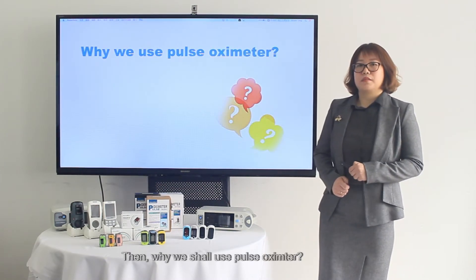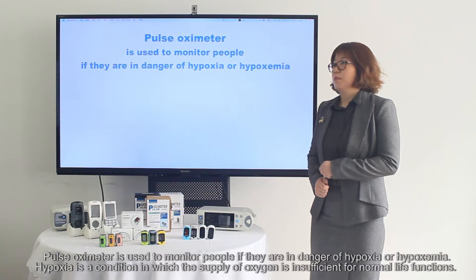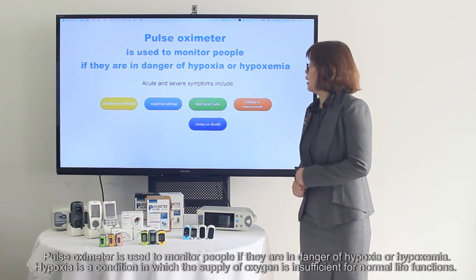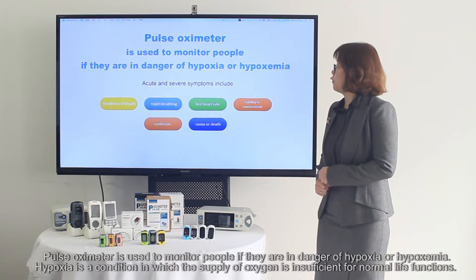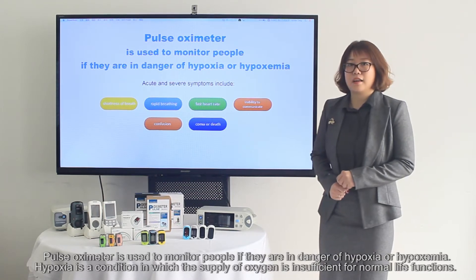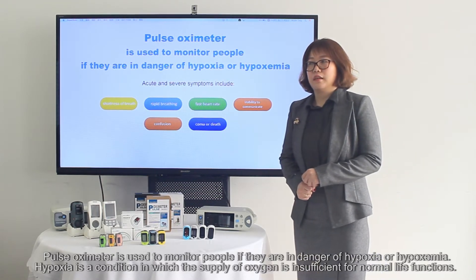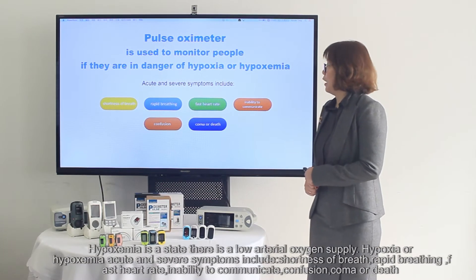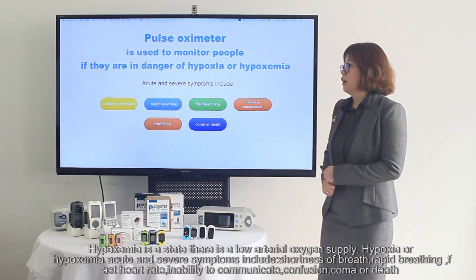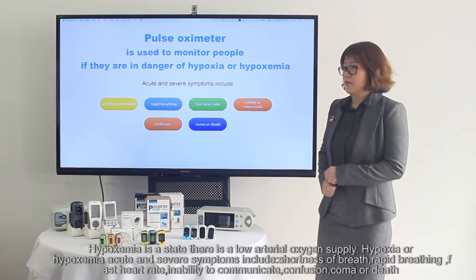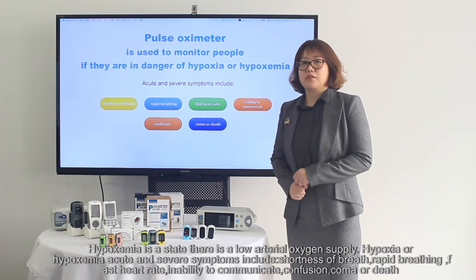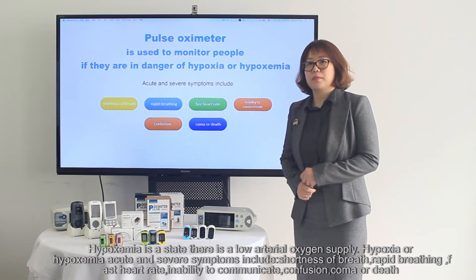Why do we use a pulse transmitter? A pulse transmitter is used to warn people if they are in danger of hypoxia or hypoxemia. Hypoxia is the state in which the supply of oxygen is insufficient for normal functions, while hypoxemia is the state where there is low arterial oxygen supply.